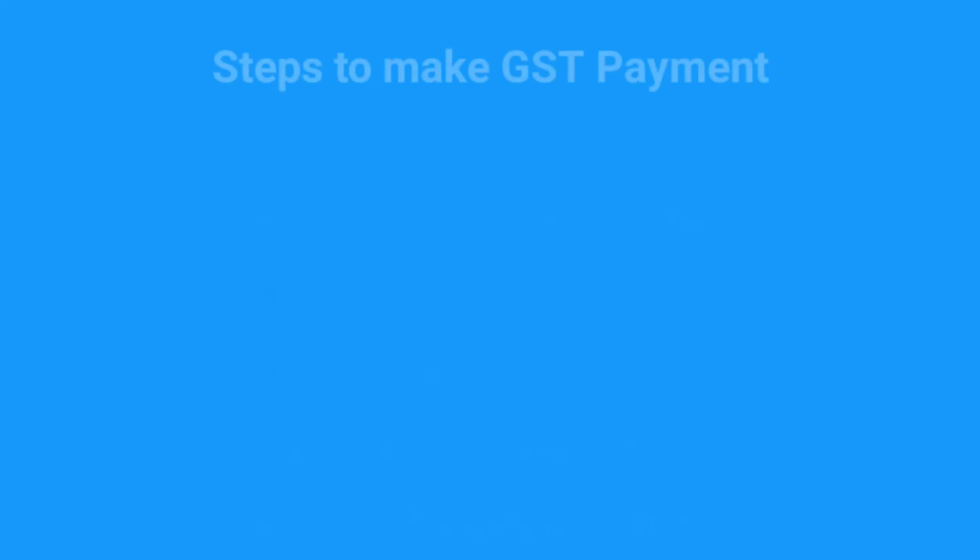The steps broadly begin with assessing the tax amount that needs to be paid in cash after considering the ITC set-off. Followed by this, generate a GST challan on the GST portal, either by logging in or without logging in. Enter tax details to be paid in cash and choose one of the four modes of payment to create the challan. A 14-digit CPIN, i.e. Common Portal Identification Number, is generated which will be valid for 15 days to complete your GST payment. Upon completing the payment through the selected mode, a 17-digit Challan Identification Number or CIN is issued. Thereafter, the electronic cash ledger balance gets updated automatically.